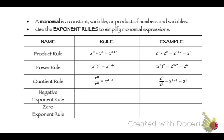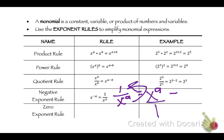The negative exponent rule. Whenever you have a negative exponent, we want positive exponents — we don't like negative exponents. They always just flip down to the bottom. So x to the negative a power is the same as 1 over x to the a, and vice versa. If you had 1 over x to the negative a power, that equals x to the a, because it just pops up to the top.